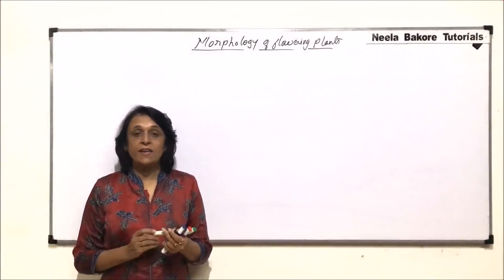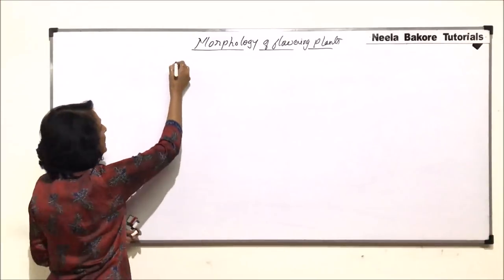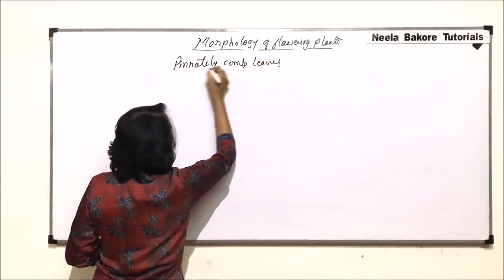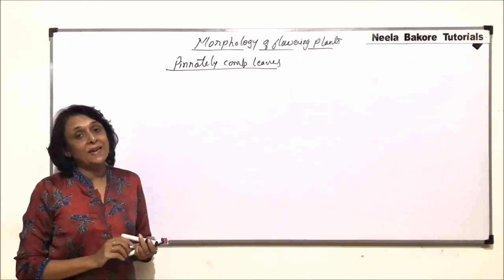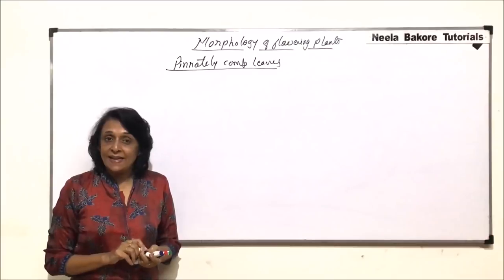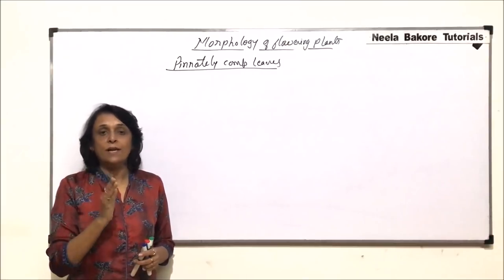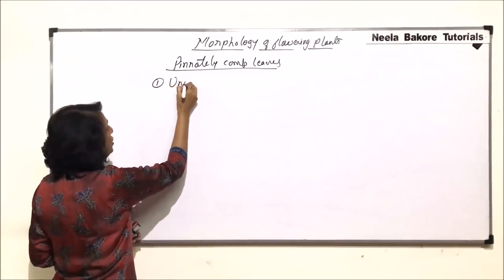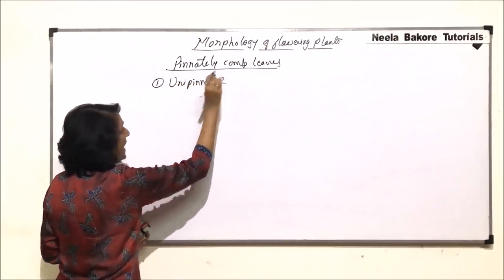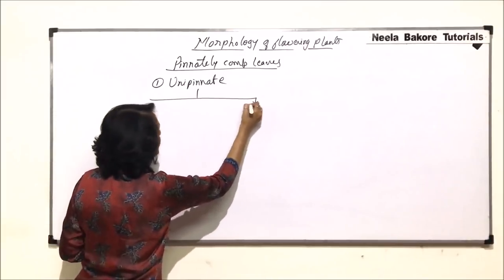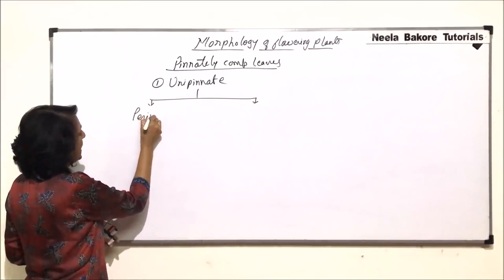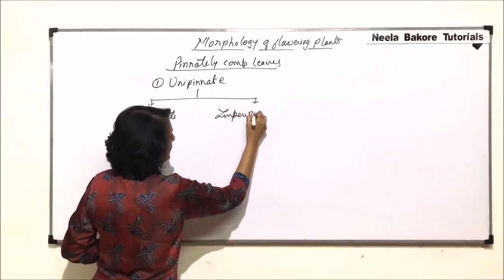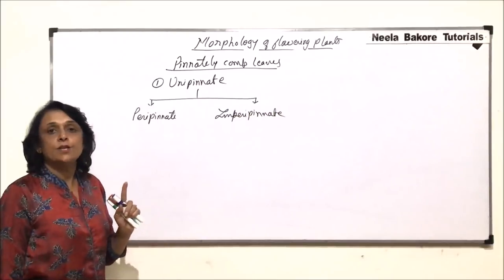Now we will discuss various types of pinnately compound leaves. We have understood which type of leaf would be called pinnately compound. Now the leaf blade is undergoing incision and the incision is going to touch the midrib. But if the incision is only once, then we will call it unipinnate. In unipinnate there are two subtypes: one is known as paripinnate and the other is known as imparipinnate. In both cases the incision is only once.